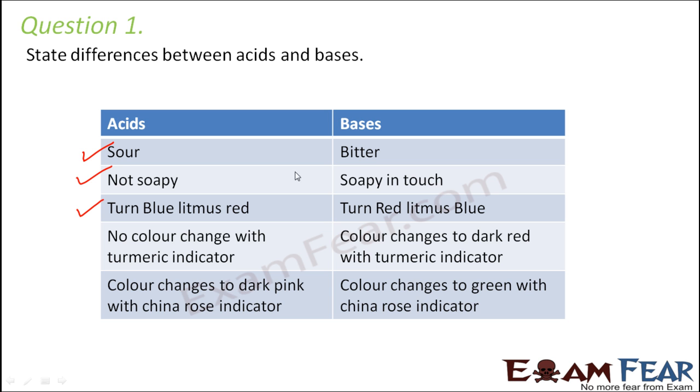Acids, they turn blue litmus red. Bases they turn red litmus blue, just the opposite.